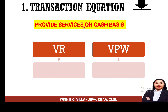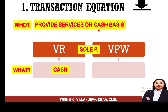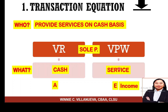Next example: you rendered a service and were paid in cash. Who is involved? The sole proprietorship. What did the business receive when it sold the service? Cash. What did it give out? Service. Cash received is tangible, so that is an asset. The service rendered is intangible, but it is what you sell — and that becomes income, which is part of equity. The transaction is between the business (the seller) and the customer (the buyer).